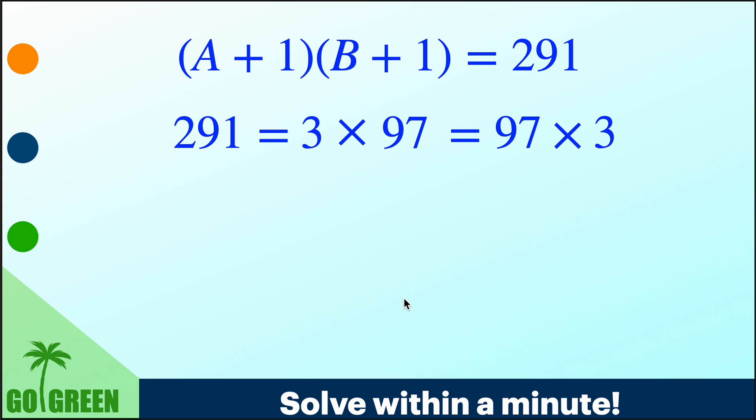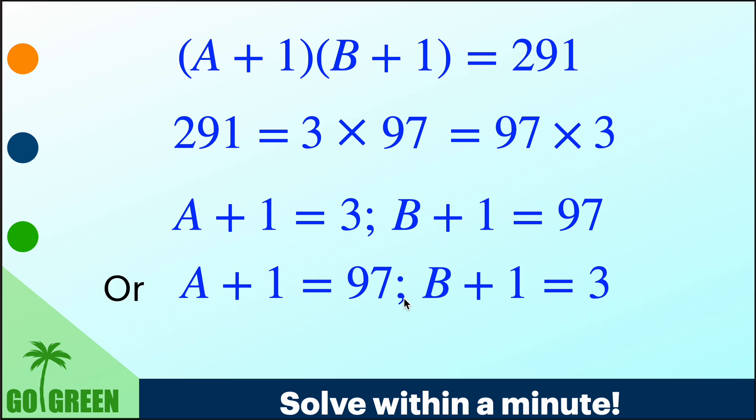we should get A plus 1 is 3, B plus 1 is 97 or A plus 1 is 97, B plus 1 is 3. So A plus 1 equal to 3, B plus 1 equal to 97 or this. The first one is 97, second one is 97.